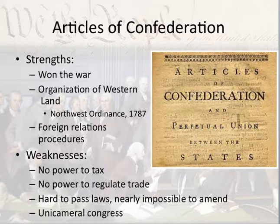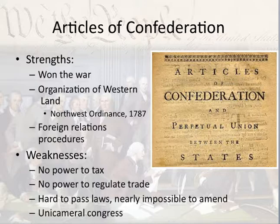Weaknesses are something the College Board loves to hit on. The Articles had no power to tax, which means they couldn't raise money, which means they couldn't do anything. They had no power to regulate trade. It was hard to pass laws and nearly impossible to amend them, seeing as a unanimous vote was needed. They had a unicameral Congress, meaning there was no executive branch and no judicial branch. The issues of the Articles of Confederation come up all the time.